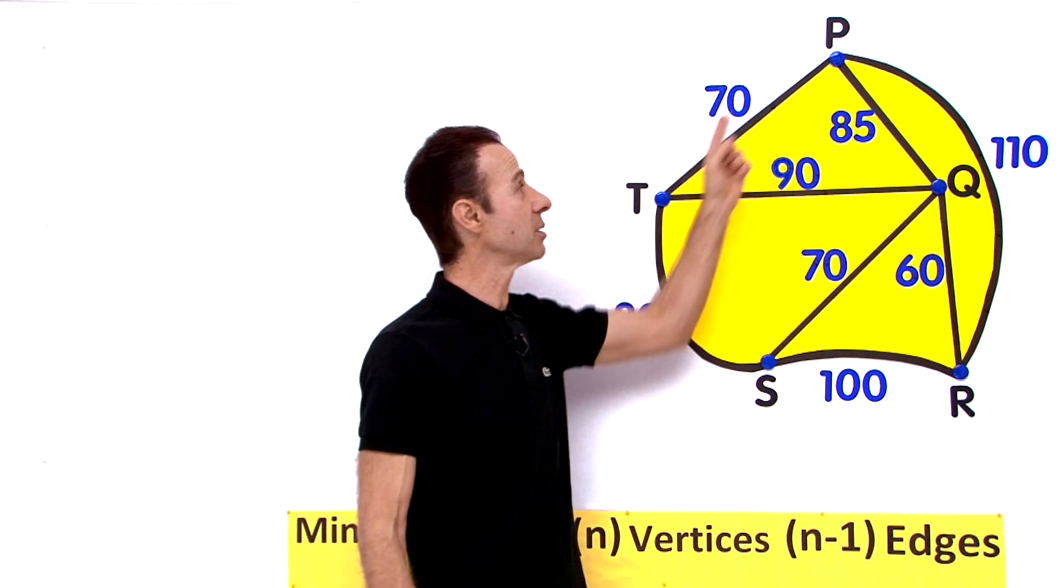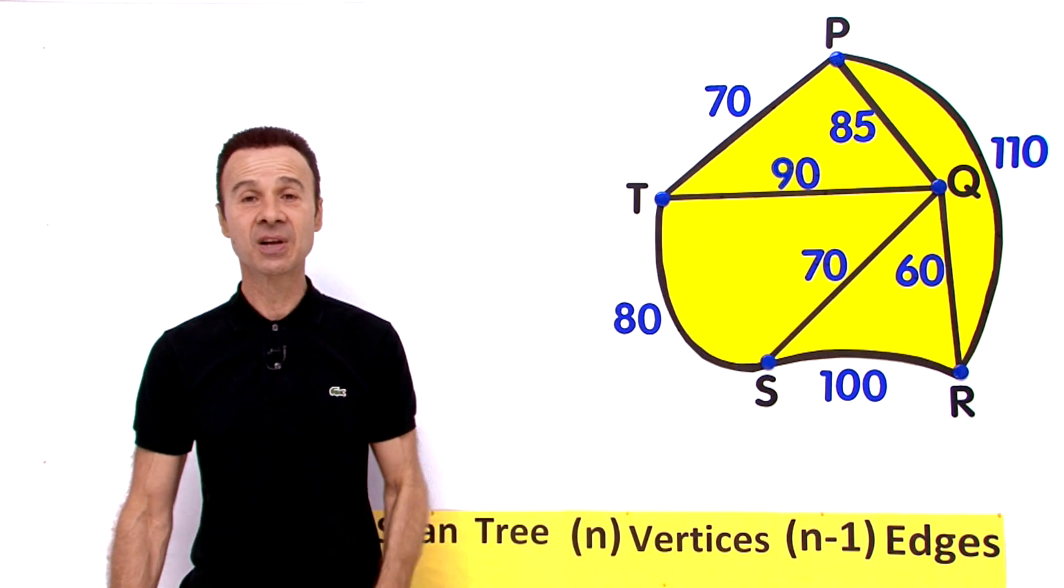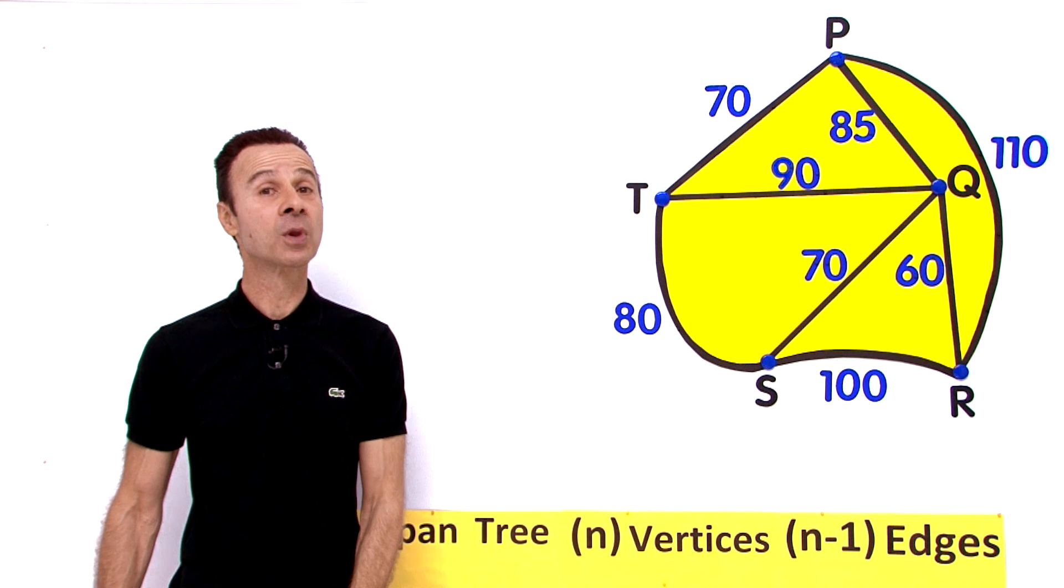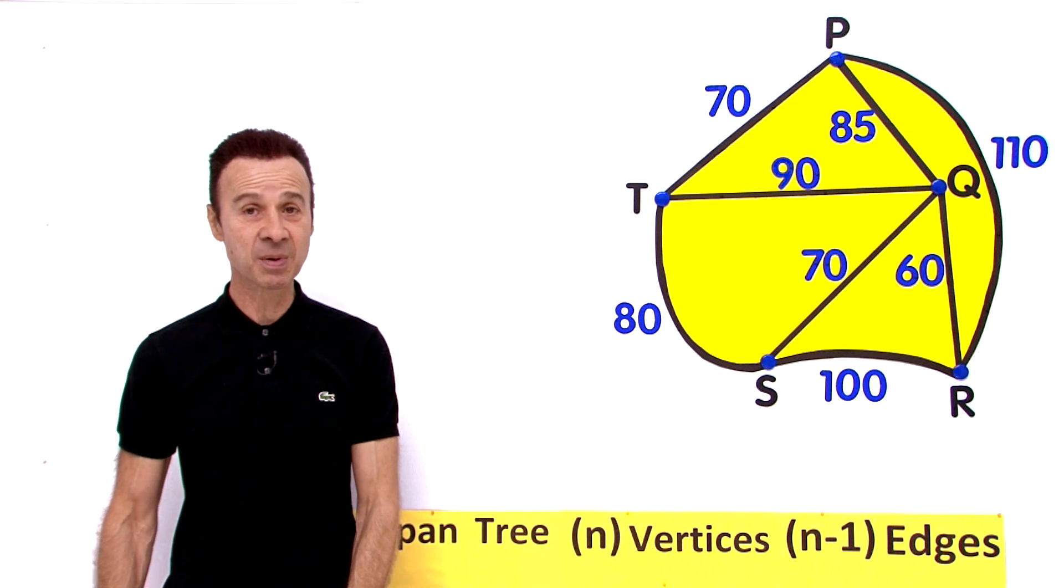So in this example we have got one, two, three, four, five vertices. That means we are going to have four edges in this minimum spanning tree.